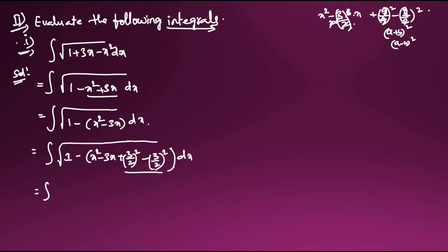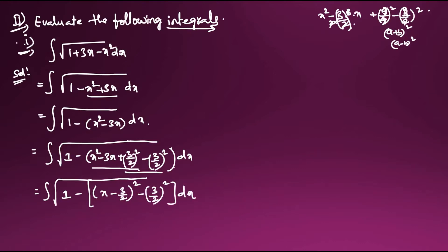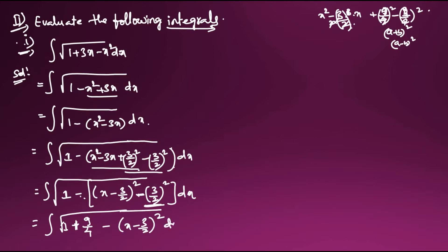The expression becomes integral √(1 - (x - 3/2)² + 9/4) dx. Multiplying out the minus term: minus times minus gives plus, so we get 1 + 9/4 minus (x - 3/2)². So the integral becomes √(1 + 9/4 - (x - 3/2)²) dx. I'm doing this step by step.